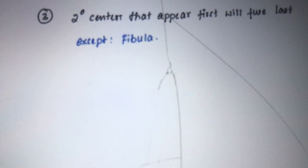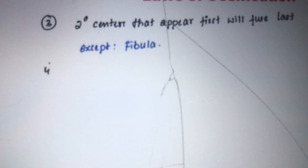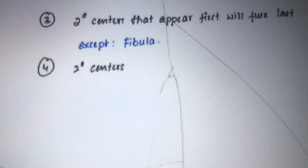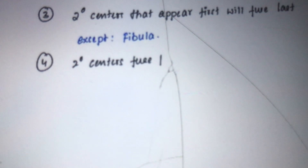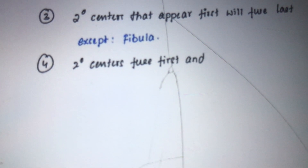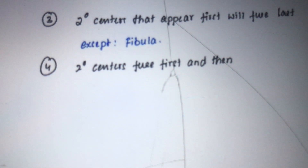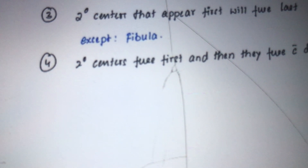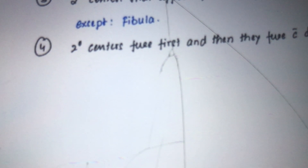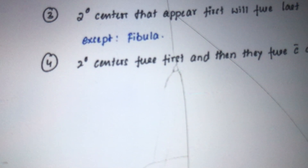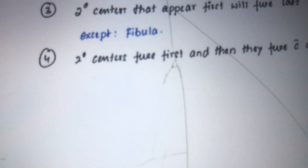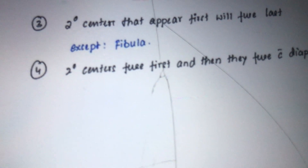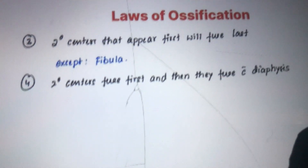The fourth law of ossification says that when there are multiple secondary centers, they fuse with each other first, and then fuse with the diaphysis or shaft of the bone.